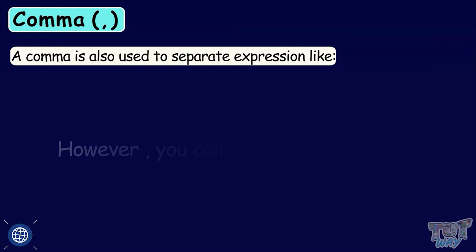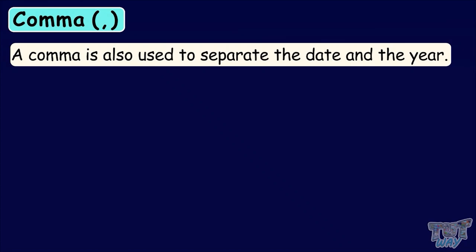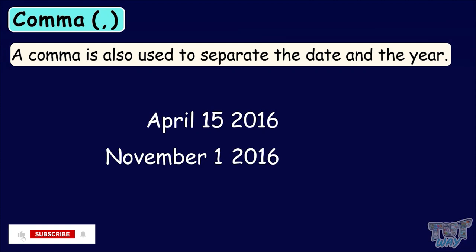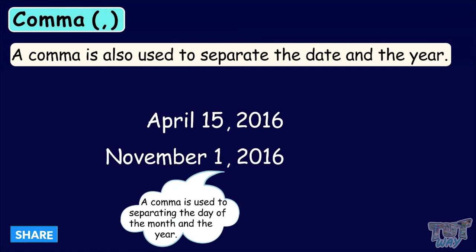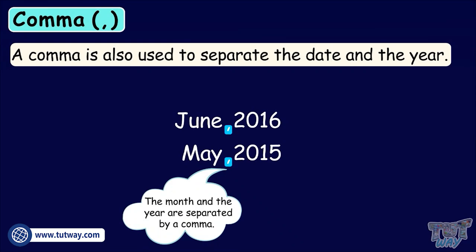Here is another usage of comma. A comma is also used to separate the date and the year, like April 15th, 2016, November 1st, 2016. So we use a comma to separate the date and the year. We can also write June 2016, May 2015. Here also, the month and the year are separated by a comma. So kids, we have learnt a few uses of using a comma. We will learn about more rules in our later sections.